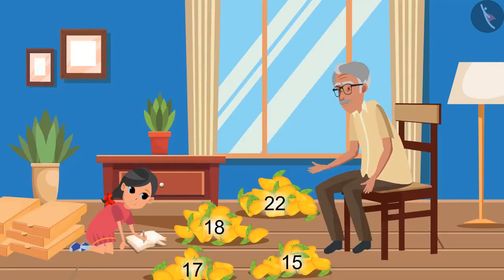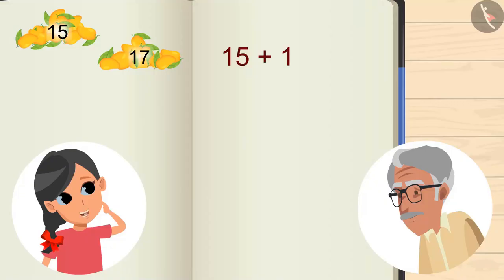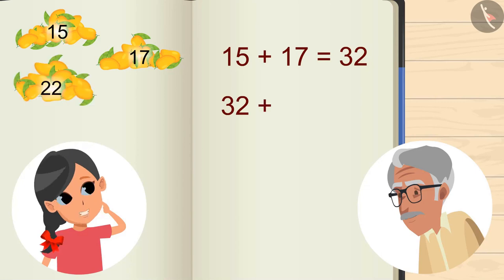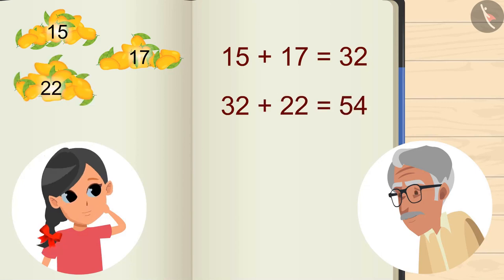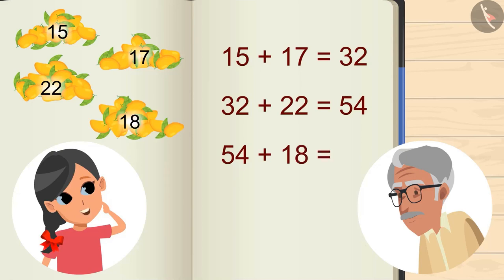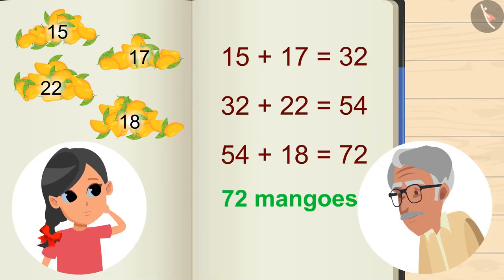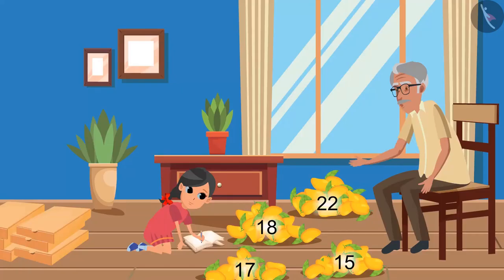Okay, let me do it. 15 and 17 gives 32. 32 and 22 gives 54. 54 plus 18 gives 72. So we have a total of 72 mangoes. Very good! Now we will keep the mangoes in these boxes.